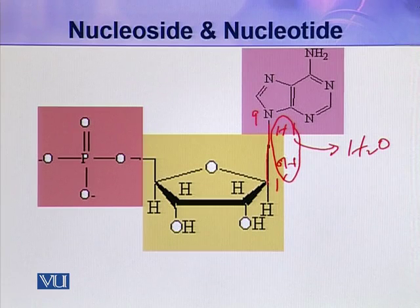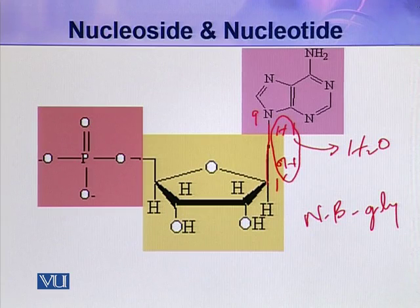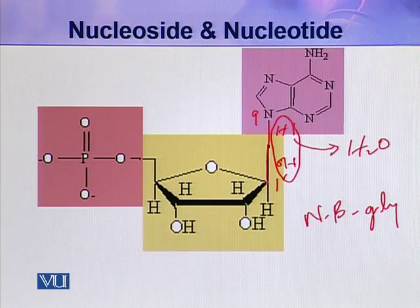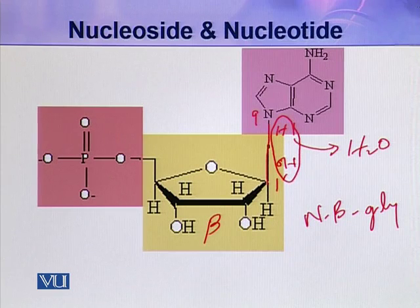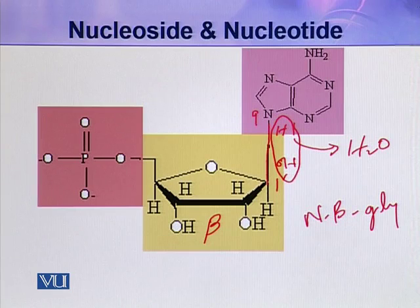This attachment is called an N-beta glycoside linkage. It is called N-beta glycoside because this is a covalent bond in which the nitrogen of the nitrogenous base is included, and the pentose is in its beta configuration. That is why the name N-beta glycoside is given to this covalent bond.